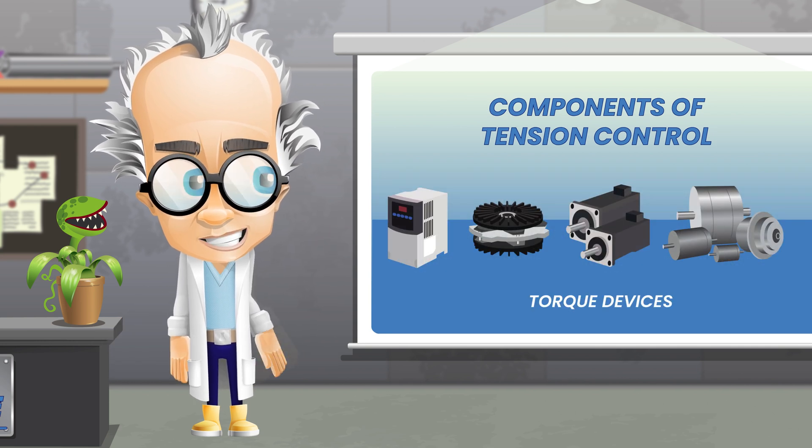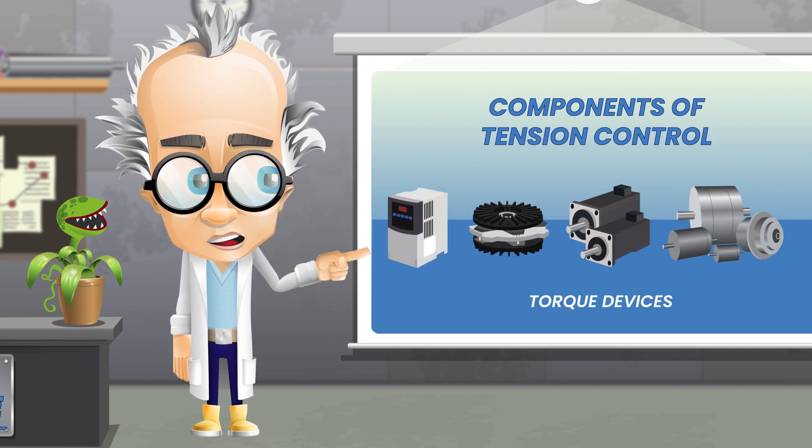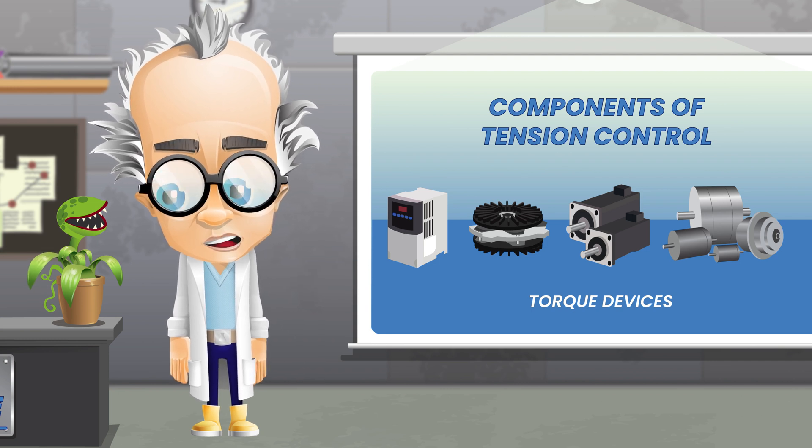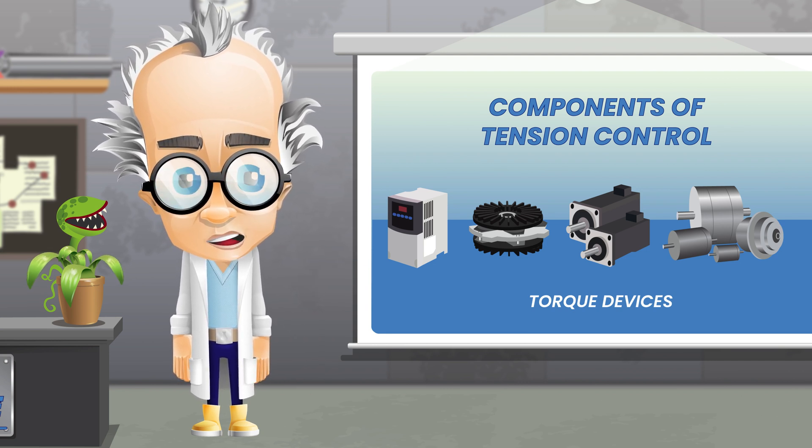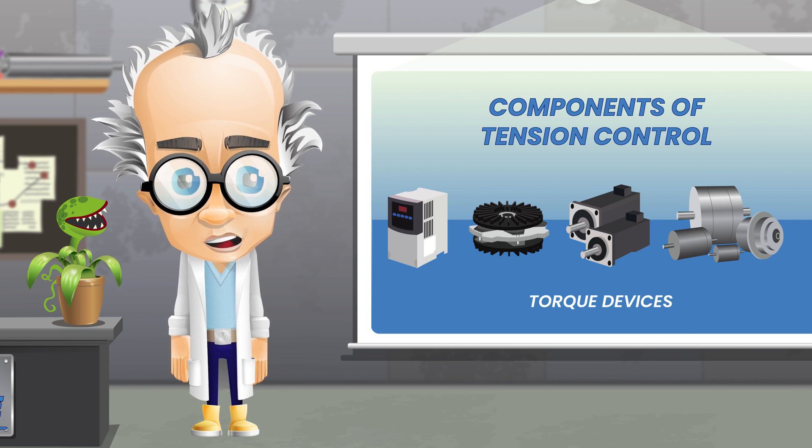Common torque devices include brakes, clutches, and motor drives. Depending on the type of device being used, torque output is affected by controlling the amount of air pressure or electrical signal entering the device.